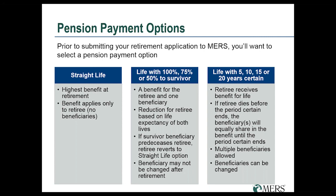With all survivor payment options, you must name your one survivor beneficiary at retirement, and after that point it locks in place — you can't change the survivor beneficiary or your payment option afterward. However, if your survivor beneficiary passes away before you, you simply notify MERS, and from that point forward your pension payment increases to the straight life payment amount for the rest of your life, though you wouldn't be able to name a new survivor beneficiary.